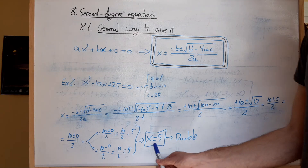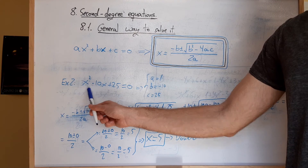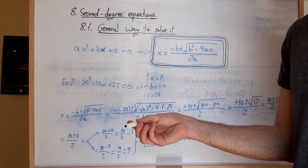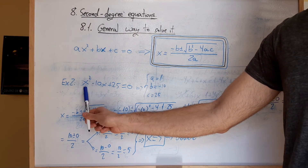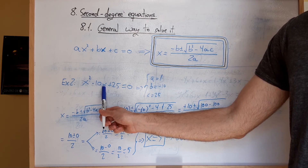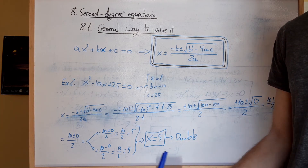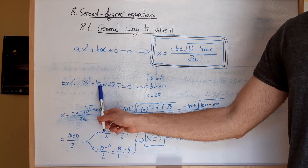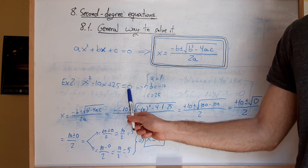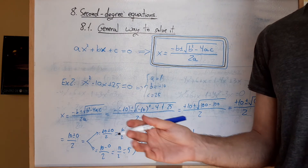Por tanto, si en esta ecuación sustituimos x por 5, nos va a dar una identidad. Vamos a comprobarlo. 5 al cuadrado son 25, menos 10 por 5, que son menos 50. 25 menos 50 más 25: 25 menos 50 son menos 25, y menos 25 más 25 son 0. Pues ya está, comprobado.